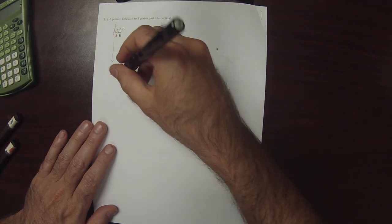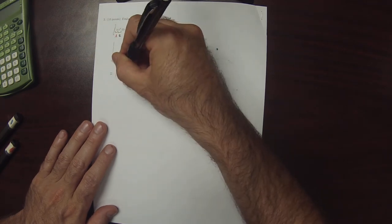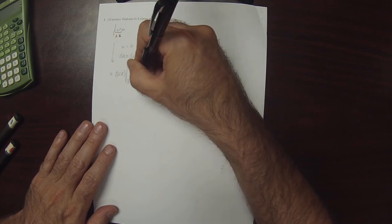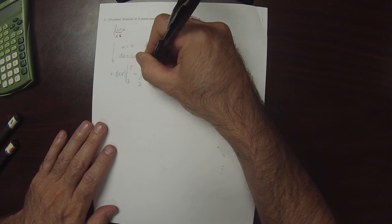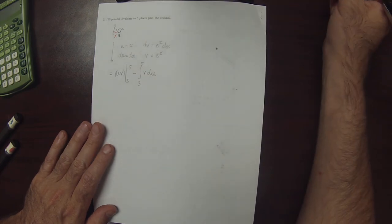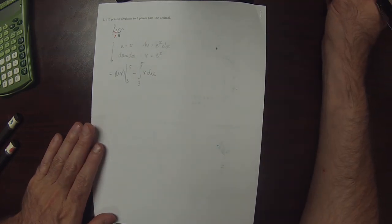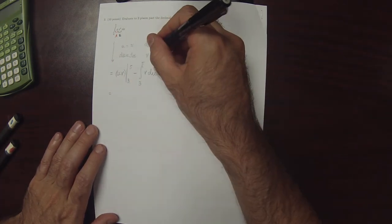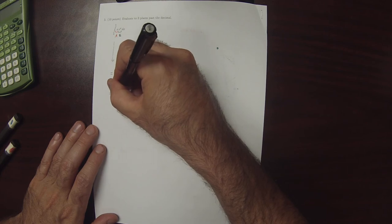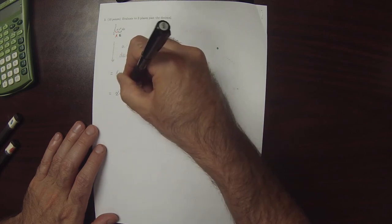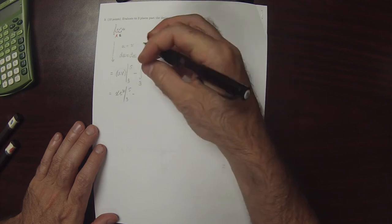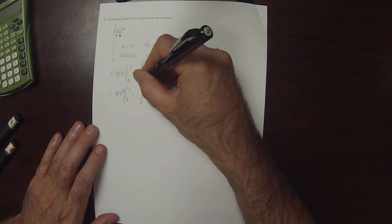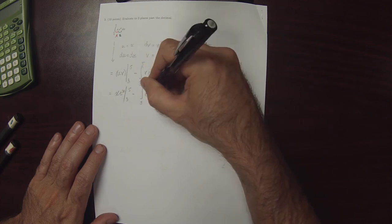So the right-hand side of by-parts is uv evaluated from 3 to 5 minus integral 3 to 5, v du. So this will be x e to x from 3 to 5 minus integral 3 to 5 of e to x dx.